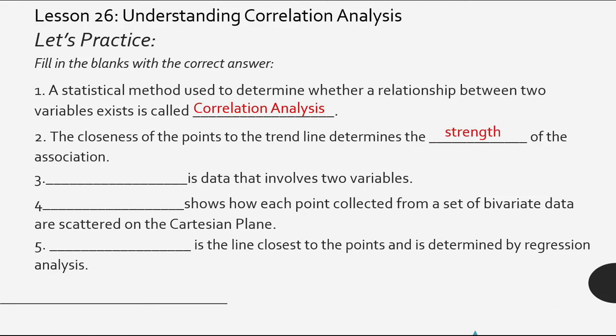Next, blank is data that involves two variables. Very good. That is bivariate data. Number four, blank shows how each point collected from a set of bivariate data are scattered on the Cartesian plane. Very good. This is scatter plot.